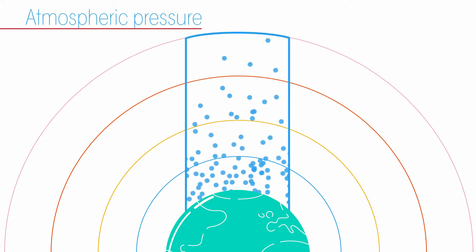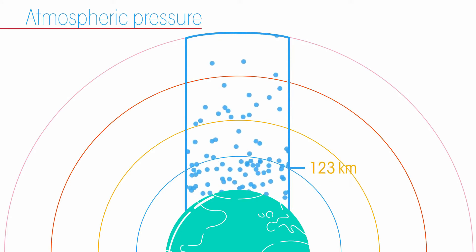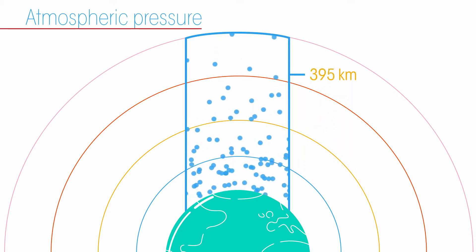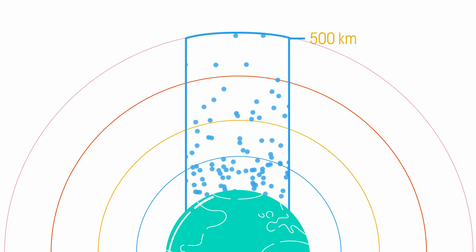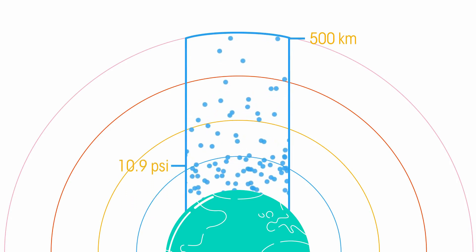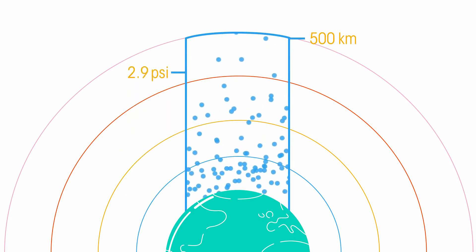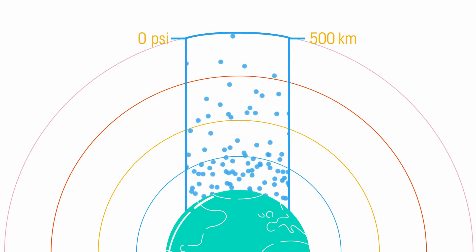The pressure of the air is related to the weight of the air above. As we increase altitude, so distance from the Earth, there is still air above us, but there becomes less air as we go further away from the Earth. So air pressure decreases as we increase altitude, until we get to the edge of the atmosphere where there is no more air and so there is no pressure.